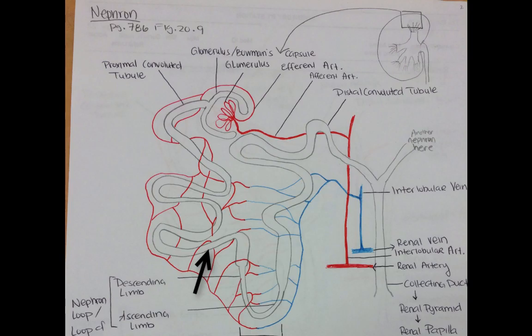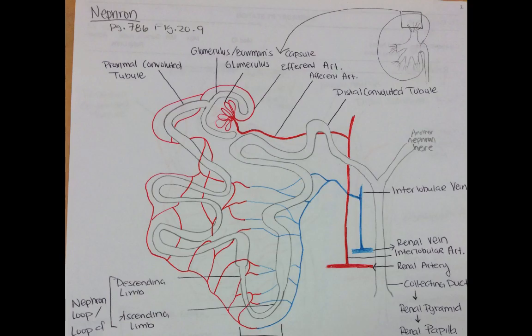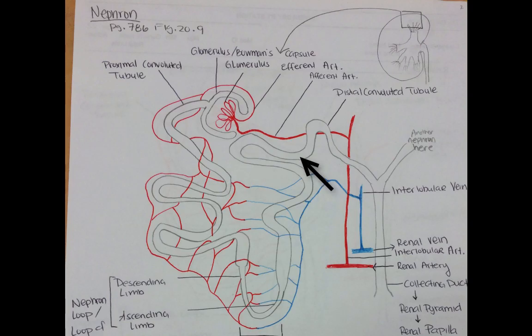The proximal convoluted tubule has an area where it starts going downwards, known as the descending loop or descending limb of Henle. Urine will flow downwards, and at some point the urine will follow the loop upwards — this is known as the ascending limb of the nephron loop. As it continues to ascend, it starts to get very convoluted again. Make sure one of your squiggles gets really close to the capsule again. Then as the urine flows through the distal convoluted tubule, at some point it will be drained into a collecting duct.